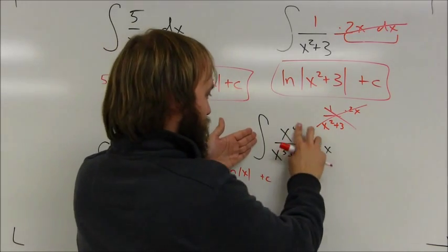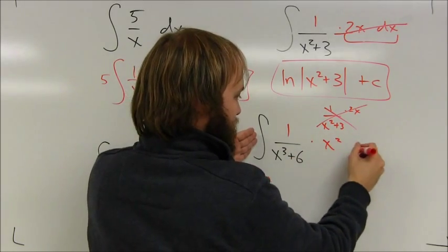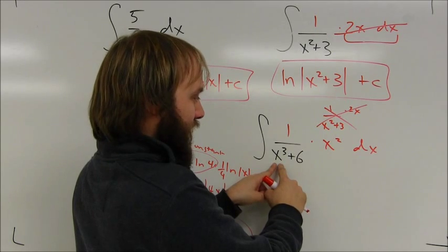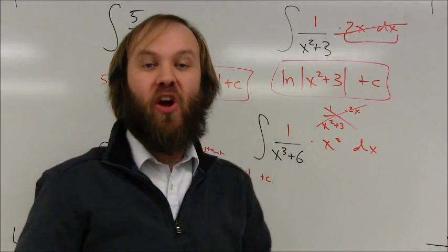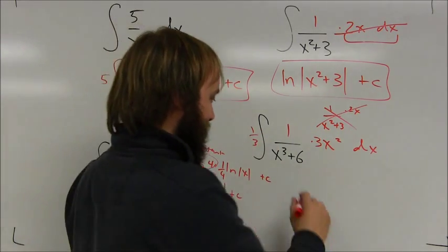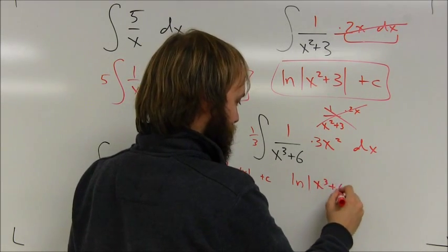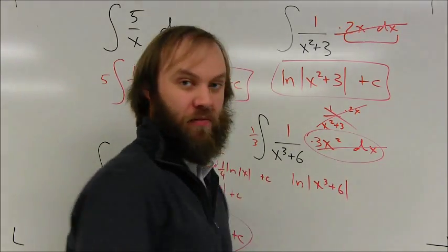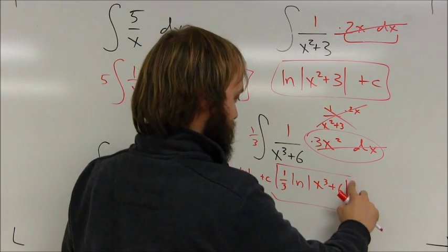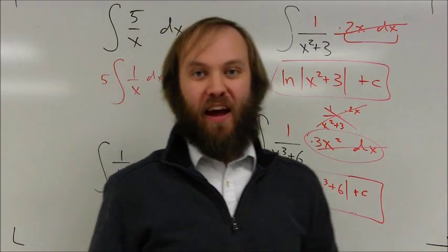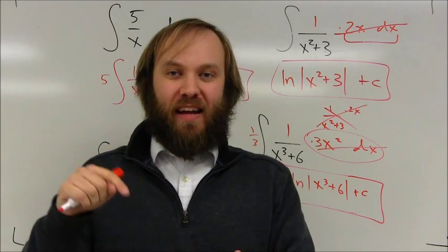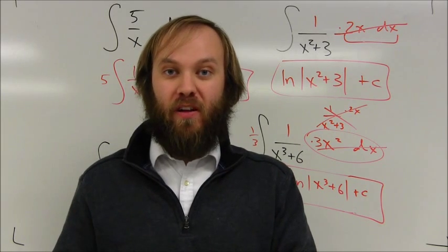The same thing happens here. Rewrite it as a reciprocal: 1 over this value times x squared dx. The inside function's derivative is 3x squared, so I need 3x squared paired with my dx. I only have x squared, so I need to insert a 3 and balance it with one-third out front. The answer is one-third times the natural log of the absolute value of x cubed plus 6, plus c. If you see fractions, try to write them as a reciprocal — a lot of times the numerator is the derivative of the inside function, and it works out nicely.